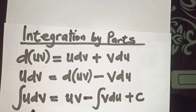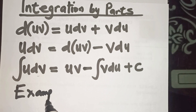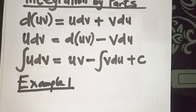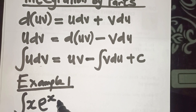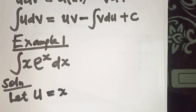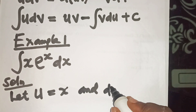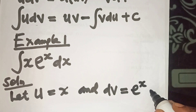We are going to take a few examples to illustrate integration by parts. Example 1: evaluate the integral of x·eˣ dx. Here, we are going to let u be equal to x, and we let dv be equal to eˣ dx.